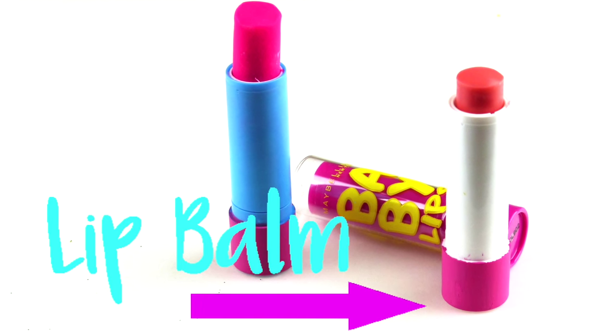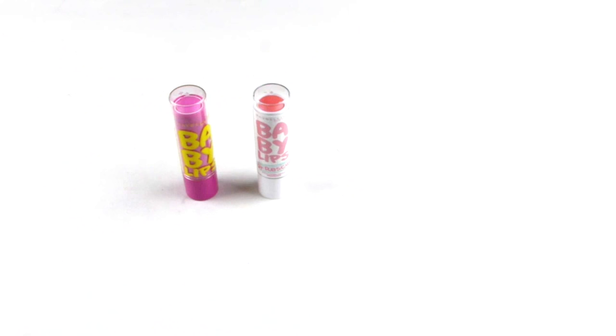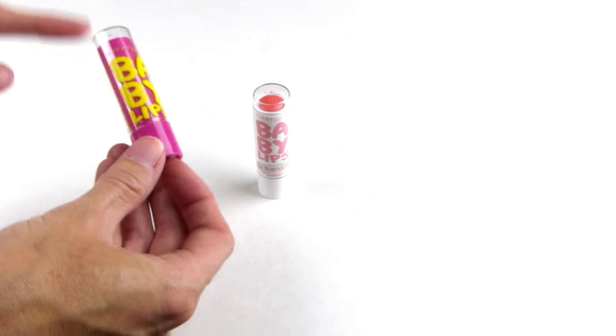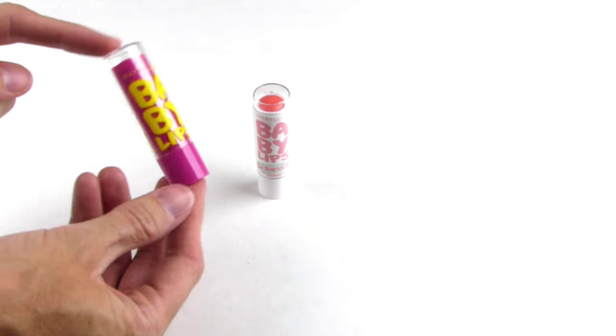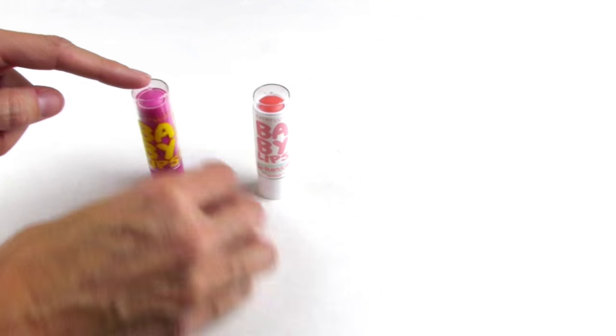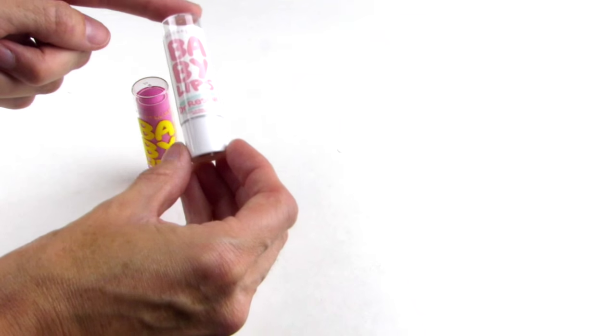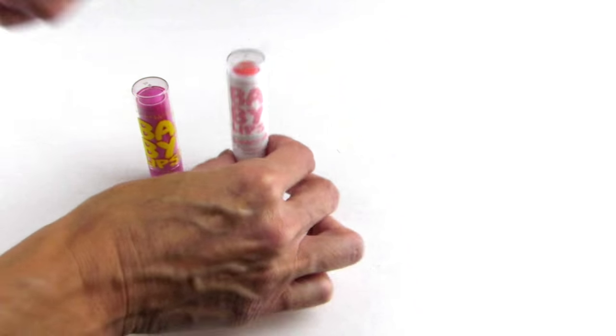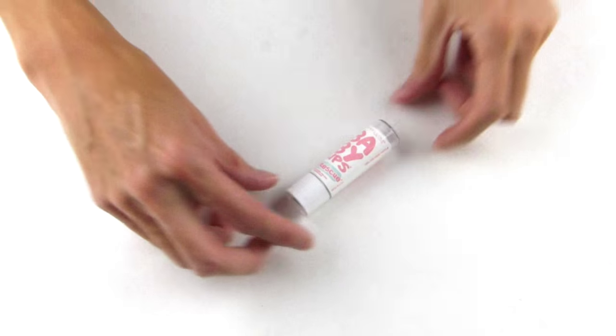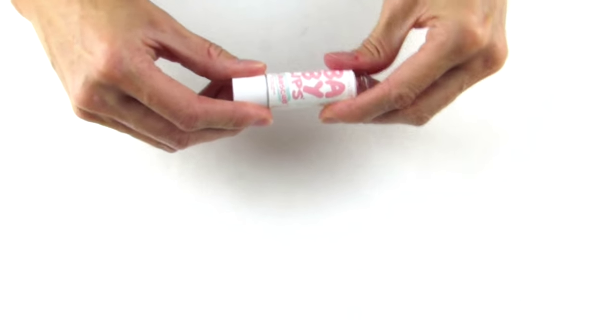So to get started, you will just need to choose a baby lips container. For this one, I will show you later on in the video how you can do it with this one, but for this video we will be using the white container. The first step is going to be to remove the label.